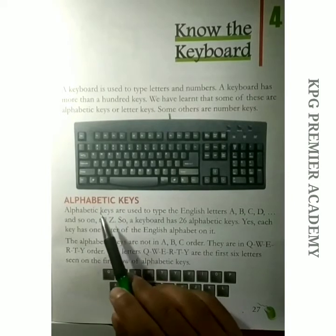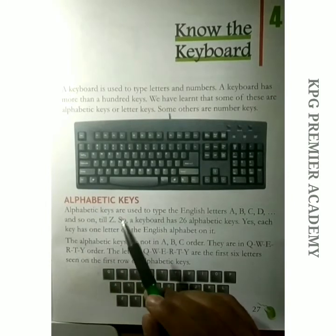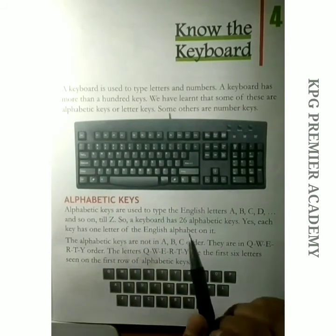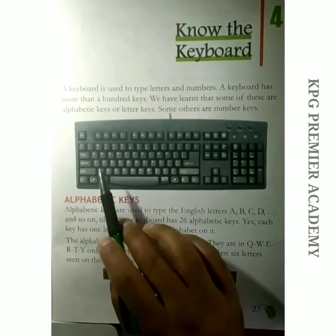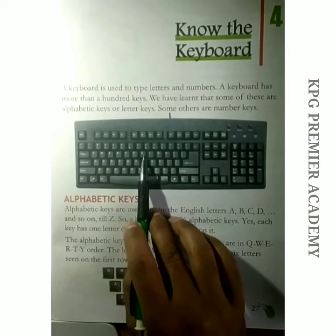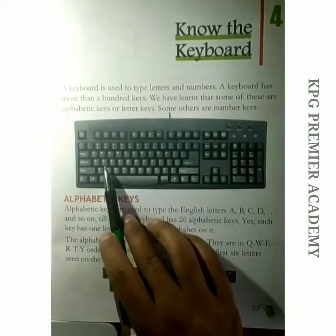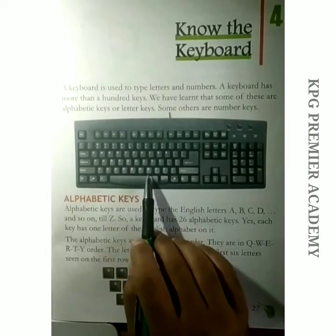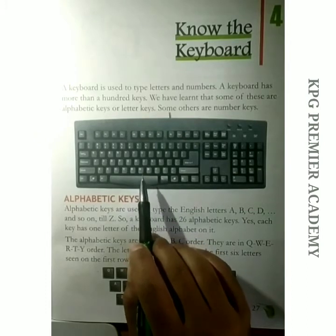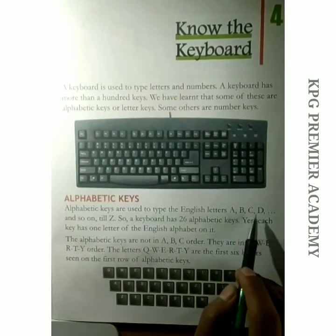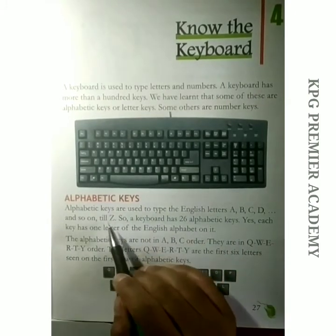Alphabetic keys are the keys which have alphabets on them — Q, W, E, R, T, Y, U, I, O, P, A, S, D till M. These keys are called alphabetic keys because they have alphabets on them. Alphabetic keys are used to type English letters A, B, C, D and so on till Z.